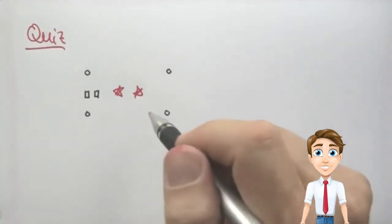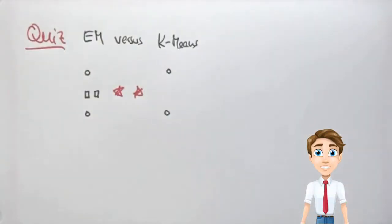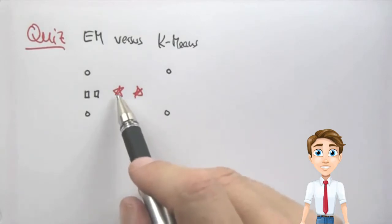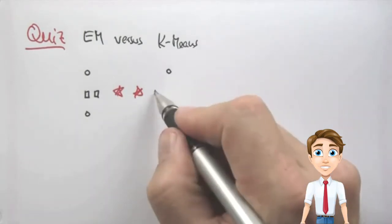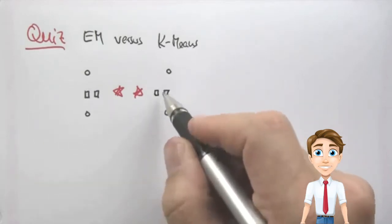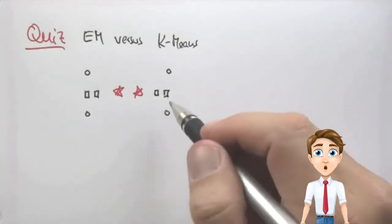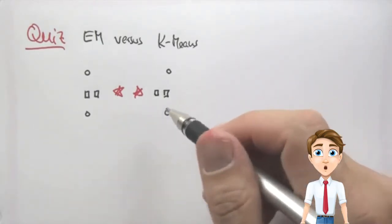This is a quiz in which I compare EM versus K-means. Suppose you're given four data points as indicated by those circles. Suppose we have two initial cluster centers shown here in red. And those converge to possible places that are indicated by those four squares. Of course they won't take all four of them, they'll just take two of them.